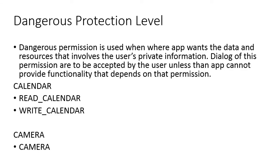Third, we have Dangerous Production Level. As the name suggests, these are dangerous type permissions. If a user allows these permissions in their app by chance or by mistake, the chances of the user's private data going into unauthorized access increase, security violation chances increase, and privacy leak chances also increase. Dangerous permission is used when the app wants data and resources that involve the user's private information. Every permission that wants to access the user's private or sensitive data will be categorized as dangerous permission. For this type of permission, a dialogue box is shown to the user, and the user based on their needs — if they want to allow their data — allows the permission in that scenario, otherwise they deny the permission.